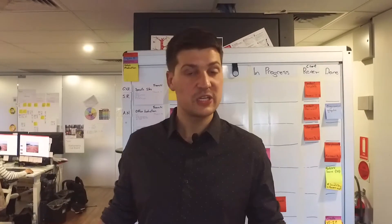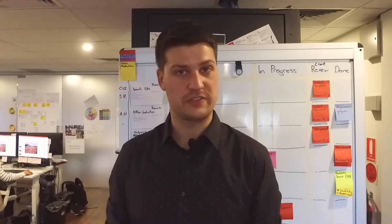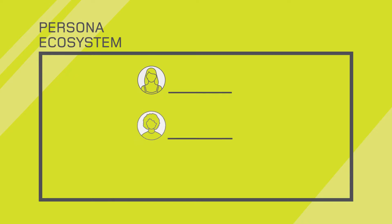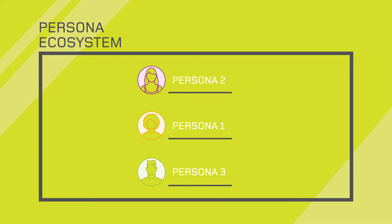Let's start by taking a look at the learner ecosystem. We start by defining our core persona in the middle like this. Then we explore who else might be influenced or affected by any potential solutions we design. No learner is an island, so we spend the time working both up and down the chain to explore other potential learner groups.